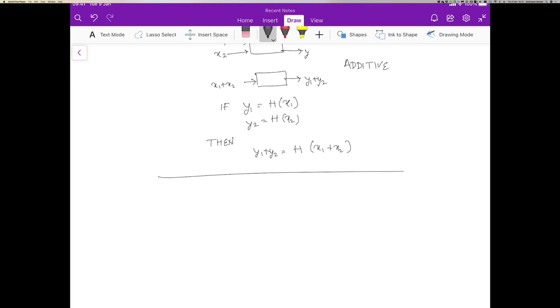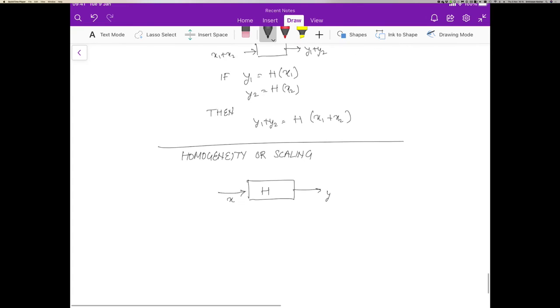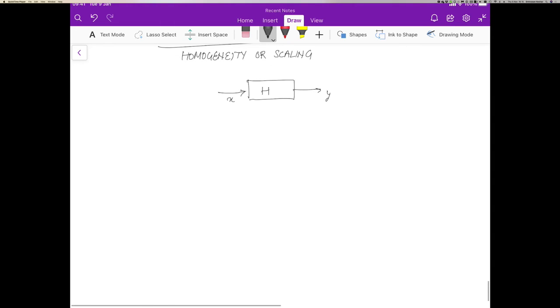The other property we need to satisfy in addition to additivity is called homogeneity or scaling. And what this means is that if we have a system such as this, and we give it some input x, and it has some output y coming out of it, what would happen if we were to give it the input k times x? In other words, we're just scaling up the input by a value. And if the output is in fact k of y, when you scale as k of x, then we would say that it satisfies the scaling property. So again, if you write it this way, we can say, if y equals H of x, then k*y equals H of k*x.